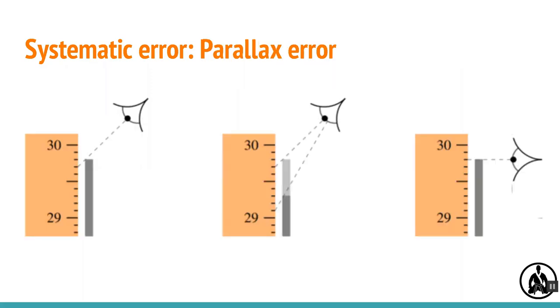Viewing a measuring scale from the same place every time instead of moving your head in line with the needle or object also gives a systematic error. This particular type of systematic error is called parallax error.